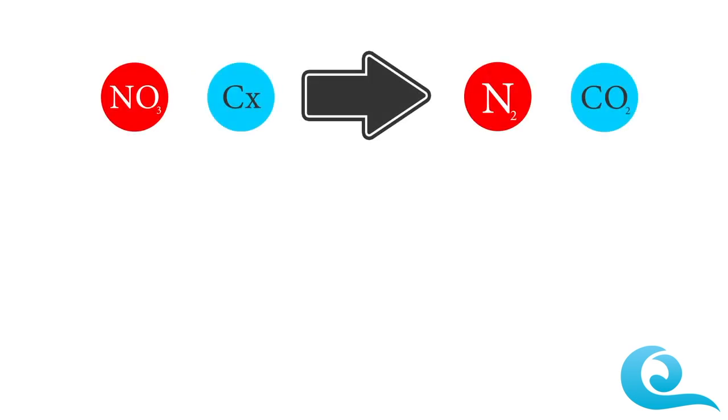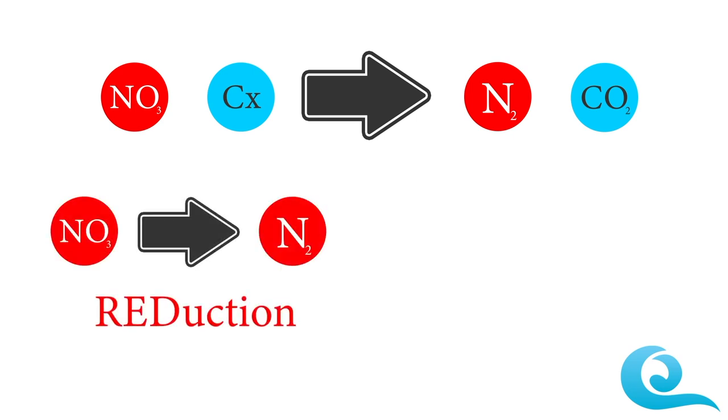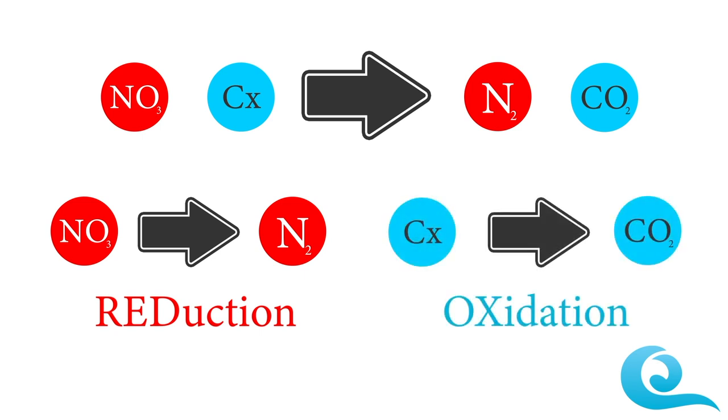Let's take a look at de-nitrification in depth. As we can see, nitrate reacts with reduced carbon sources, which we've denoted as CX. The nitrate is converted to nitrogen gas and the CX is converted to carbon dioxide. The nitrate is reduced into nitrogen gas as it is losing oxygen, and the reduced carbon source is oxidized into carbon dioxide as it is gaining oxygen.